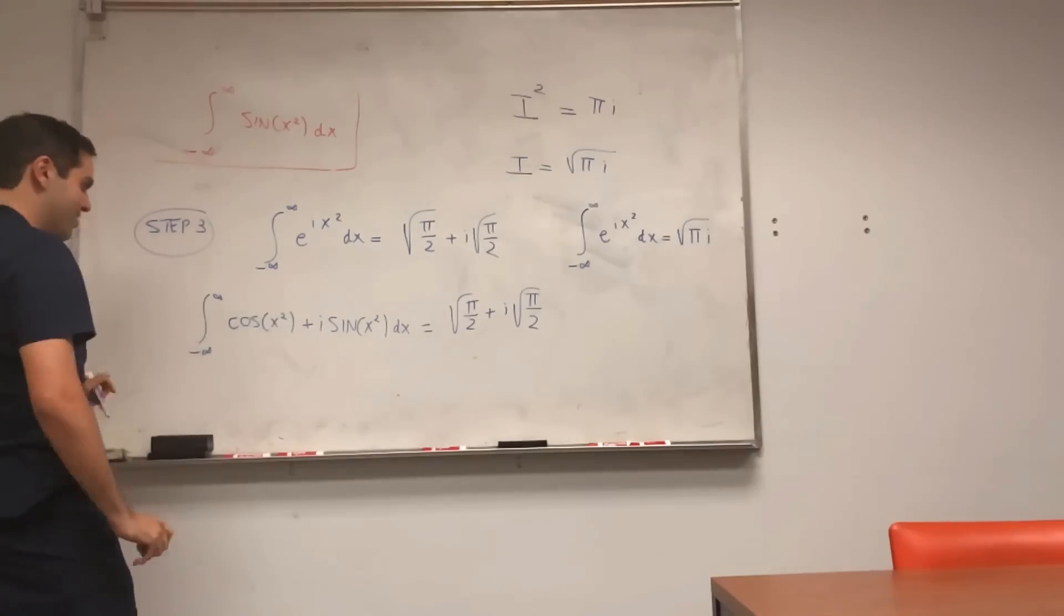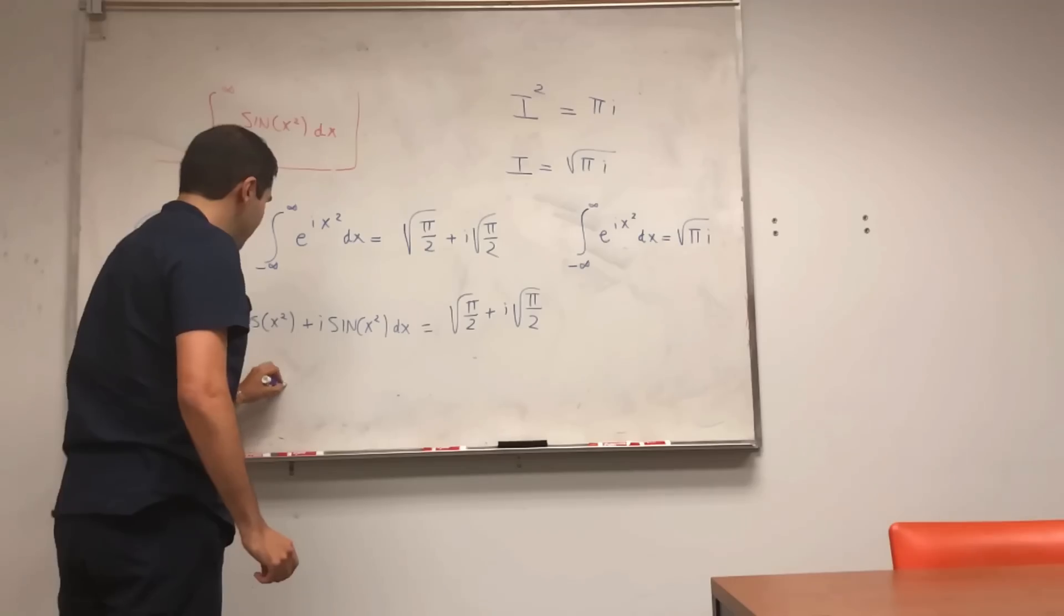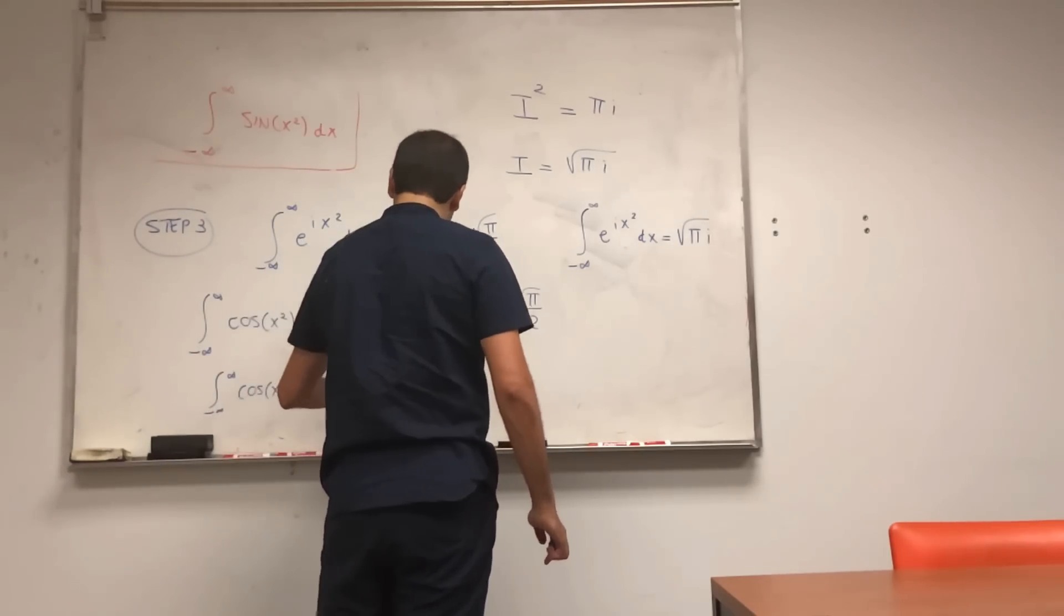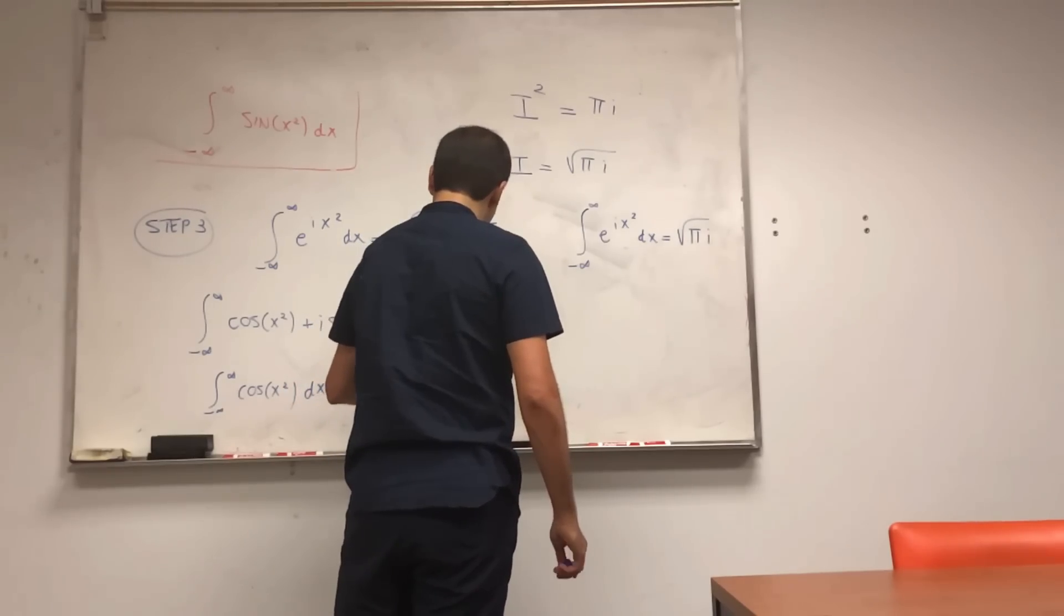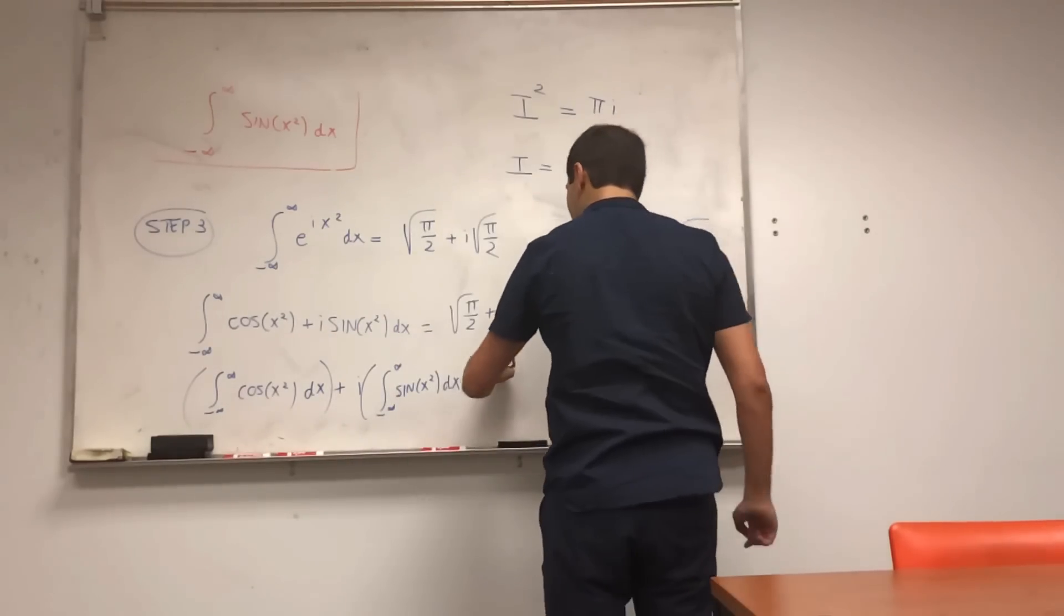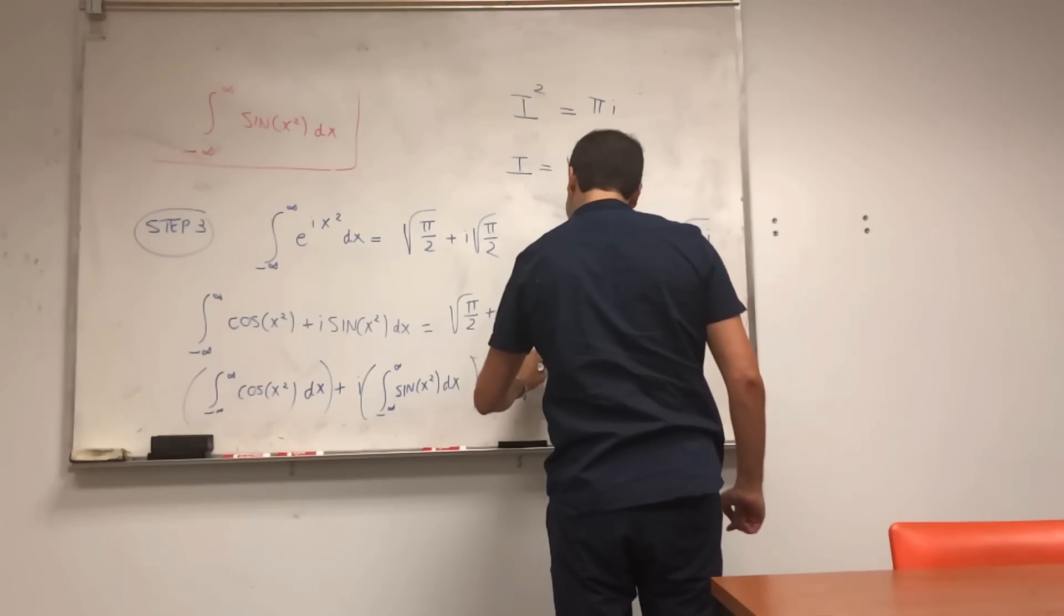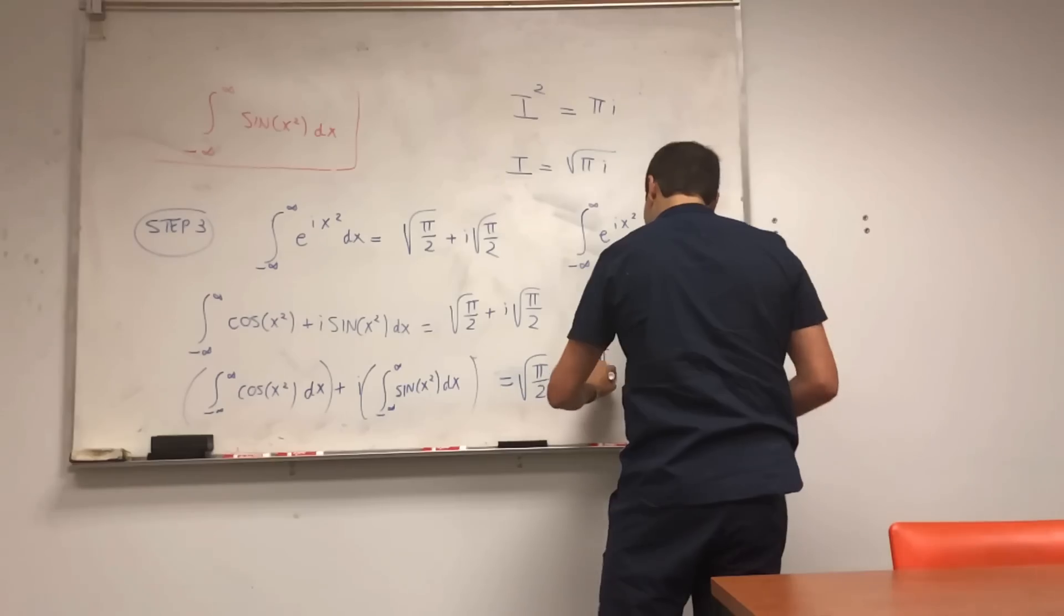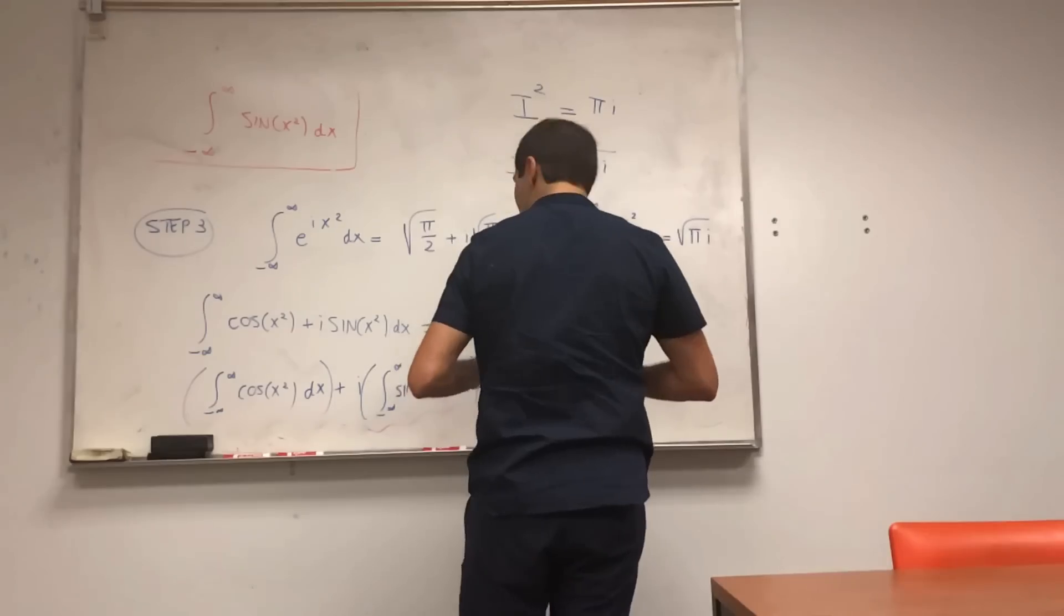And so this equals to square root of pi over two, plus i square root of pi over two. This, you can also split it up into real and imaginary parts. So by linearity of the integral, this is integral of cosine x squared dx, plus i integral sine of x squared dx. Real part plus imaginary part equals to real part plus imaginary part.